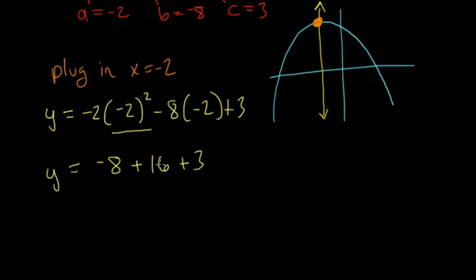So y is equal to what? Well, 16 plus 3 is 19 minus 8 is 11. y equals 11. So the vertex is negative 2, 11.